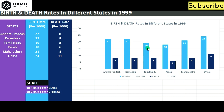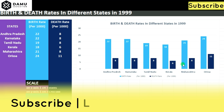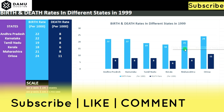For Tamil Nadu, the death rate bar is at 8. Kerala's birth rate is 18, reached at the third division after 15, and its death rate bar is at 6. After 20, the second division gives us 21 for Maharashtra's birth rate, and its death rate is 8. For Orissa, the birth rate is 24 and death rate is 11, and we have constructed the bars accordingly for all states.